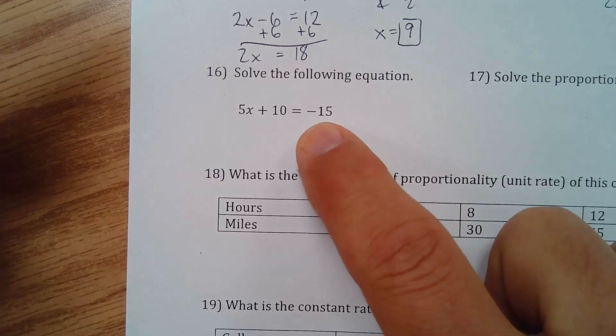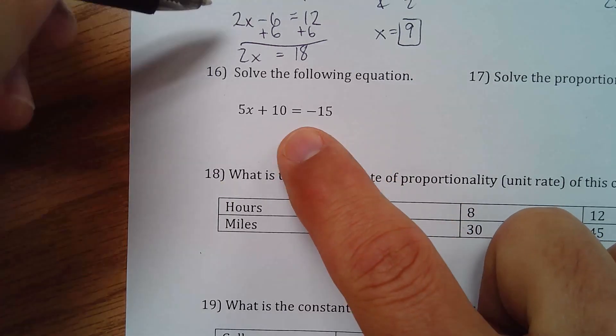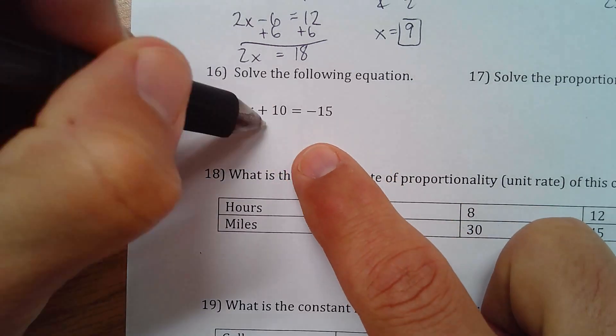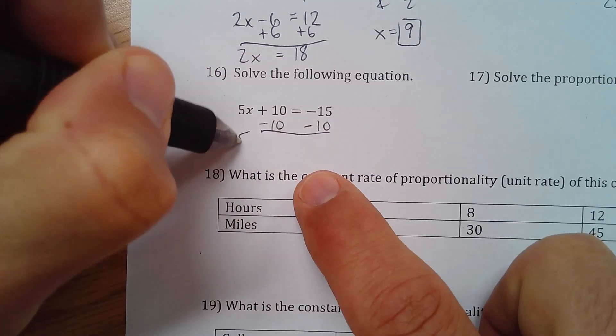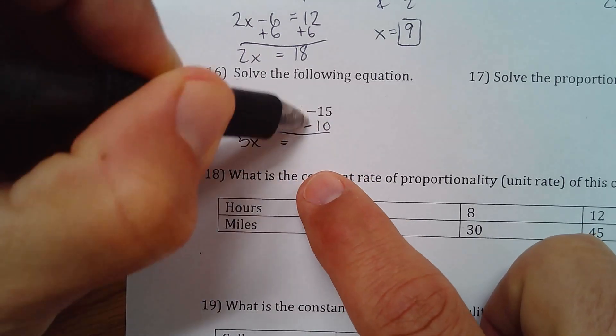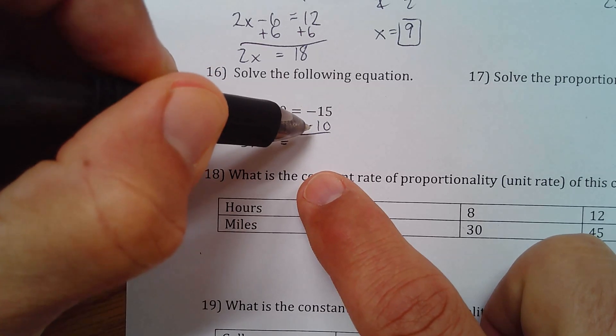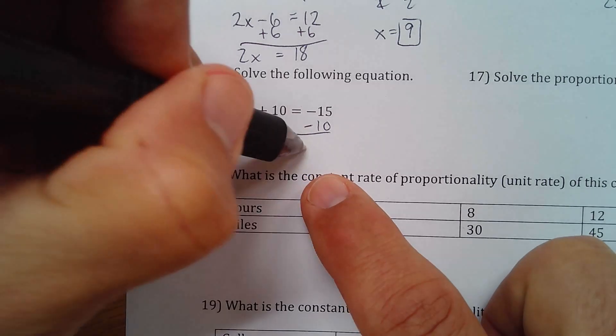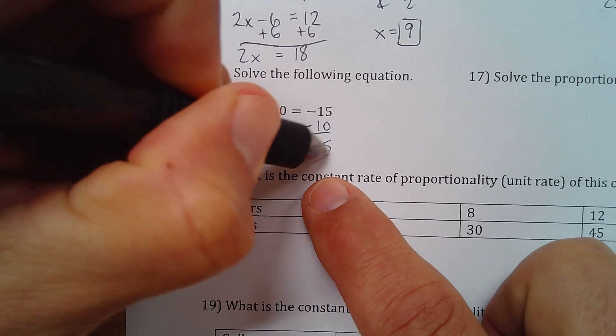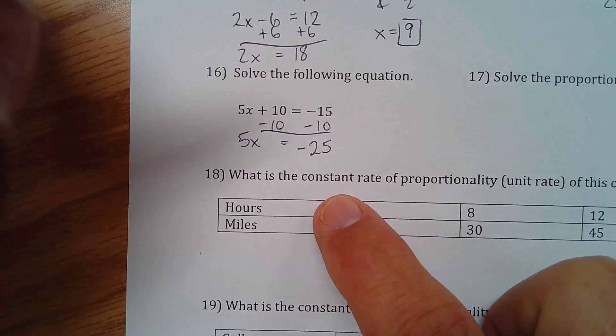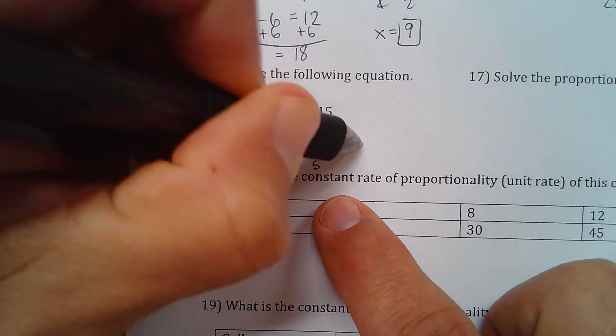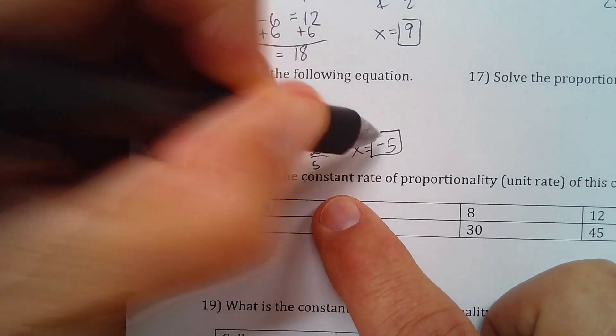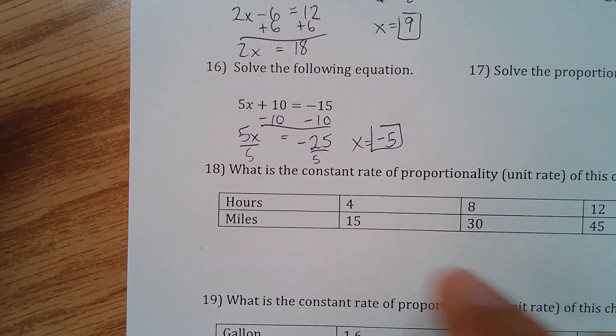Okay. This one. Solve the following equation. We have this. So, first I would subtract 10 from both sides. 5x equals. These are the same sign. I'm going to add them up. And that's going to be negative 25. And then I have, I divide both sides by 5. And x equals negative 5.